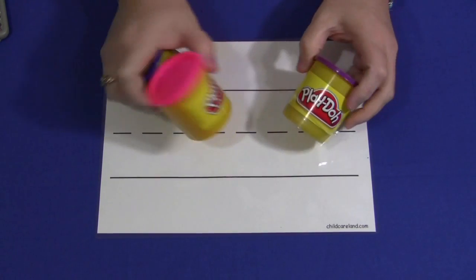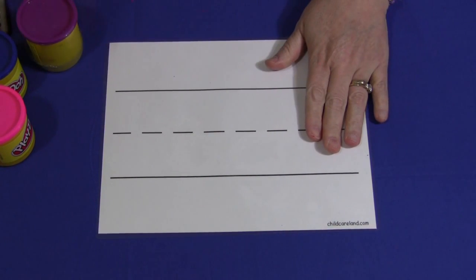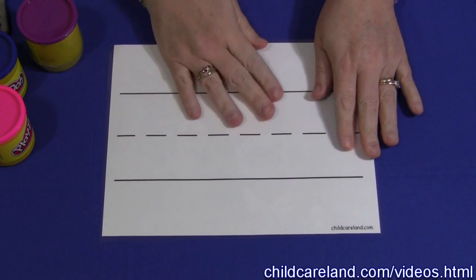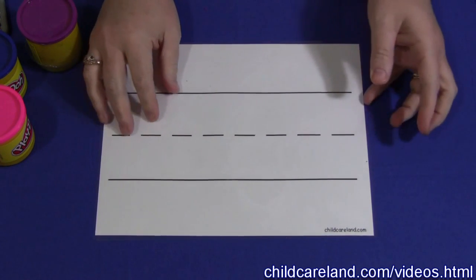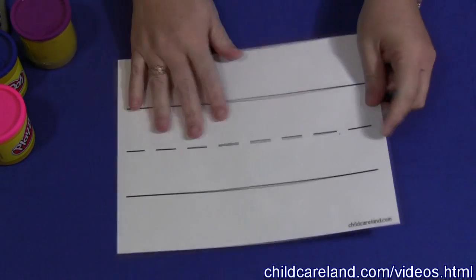All you need for this activity is some Play-Doh and a sentence strip. I have this available on my website, underneath the video section at ChildCareLand.com. You would simply print this out on cardstock and laminate it and you're good to go.